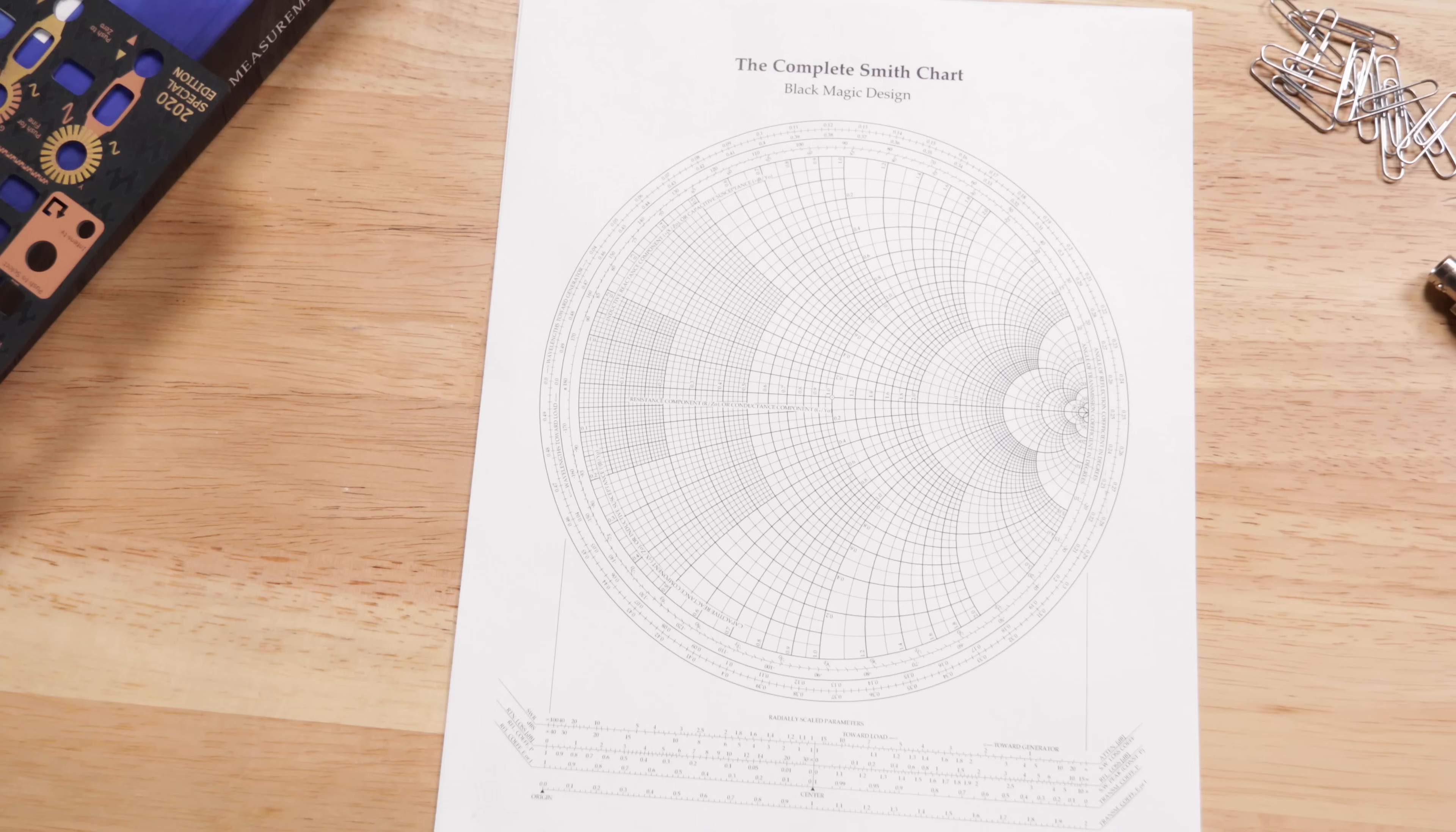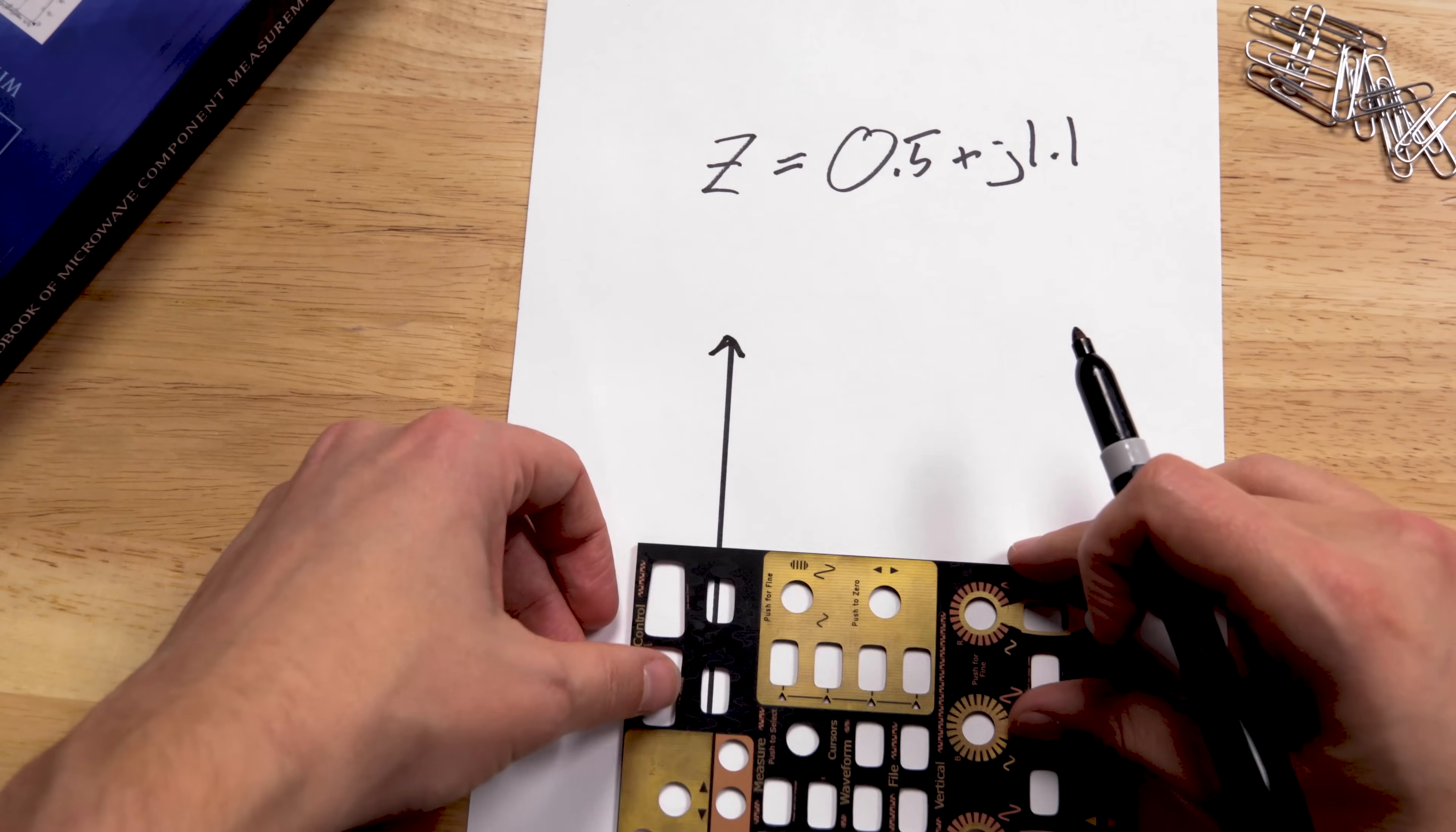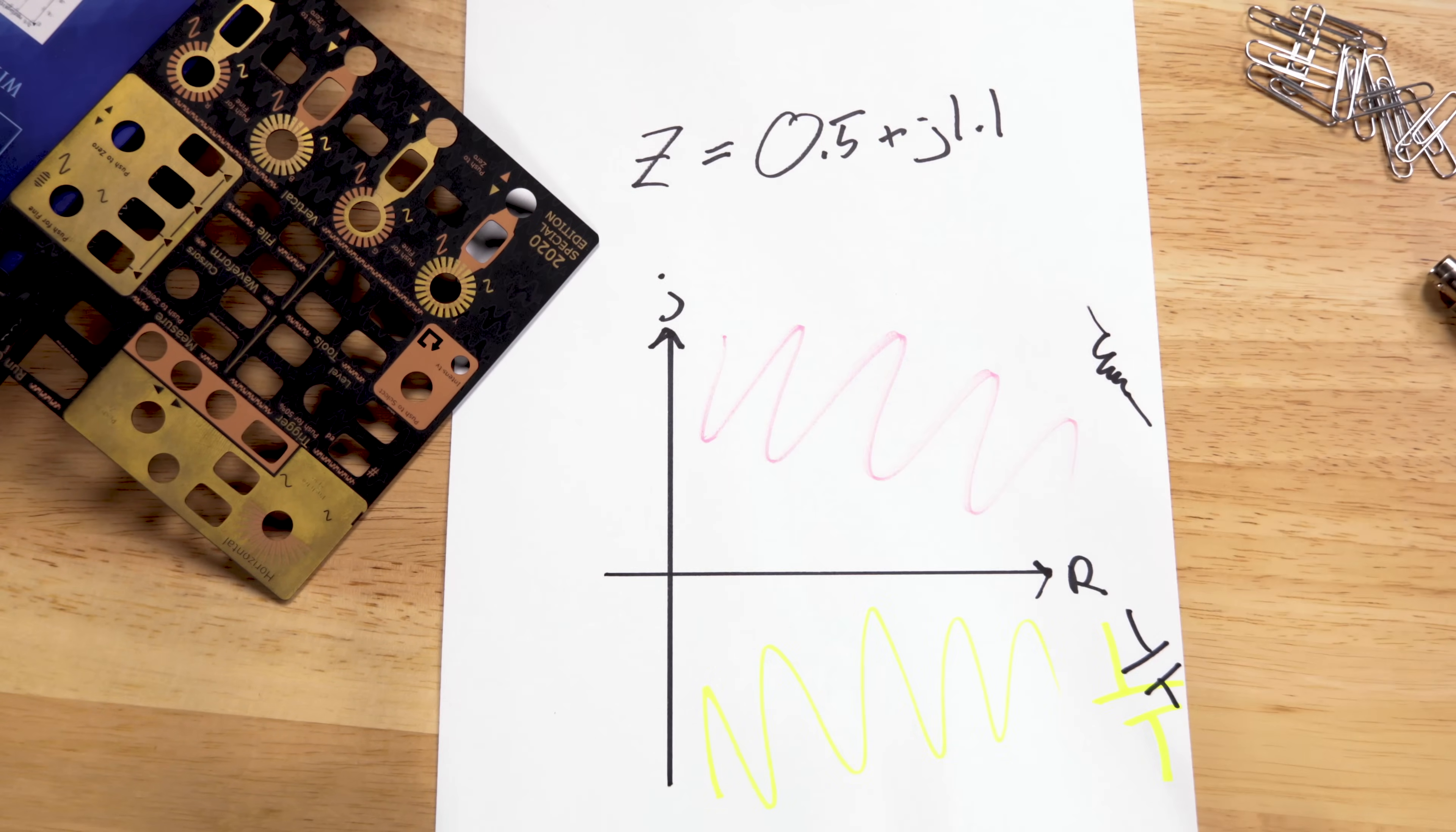Smith charts look scary at first, but they're not once you know what's going on. Let's start with the complex impedance, say 0.5 plus j 1.1. Let's plot out this impedance on our complex plane. Our x-axis is our real component, or resistance, and the y-axis is our imaginary component, or inductance and capacitance. Inductors are positive, capacitors are negative.